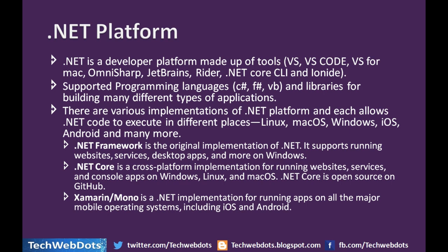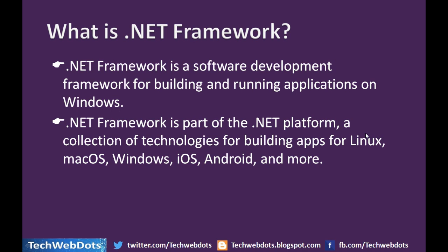The second implementation is .NET Core, which is a cross-platform implementation for running websites, services, and console apps on Windows, Linux, and macOS. .NET Core is open source on GitHub as well. The main difference in .NET Core is that it is cross-platform — it can run and be developed on any operating system. The third implementation is Xamarin, also known as Mono, which is a .NET implementation for running apps on all major mobile operating systems including iOS and Android.